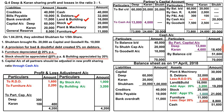Totalling the liability side: 1,00,000 plus 40,000 = 1,40,000, plus 10,000 = 1,50,000, plus 11,000 = 1,61,000. The asset side also totals to 1,61,000, confirming the balance sheet matches.